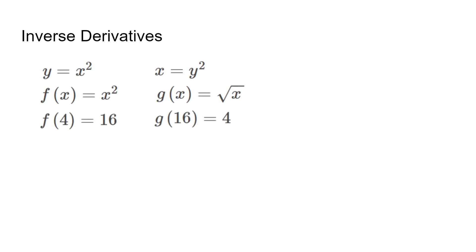f of 4 is 16, and g of 16 is 4. f prime of 4 is 2 times 4, so 8. g prime of 16 is 1 over 2 square root of 16, so 1 over 8. This gives us the formula that the derivative of the inverse at point A is 1 over the derivative of the original function at point B, given a point AB such as 4,16 in the example above.